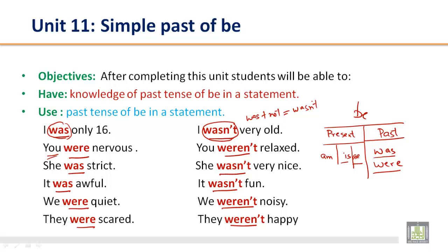You were nervous, you weren't relaxed. For plural and with you, we use were. You remember in present we use are, so in past we will use were. She was strict, she wasn't very nice. It was awful, it wasn't fun. We were quiet, we weren't noisy. They were scared, they weren't happy. Let's look at some more.